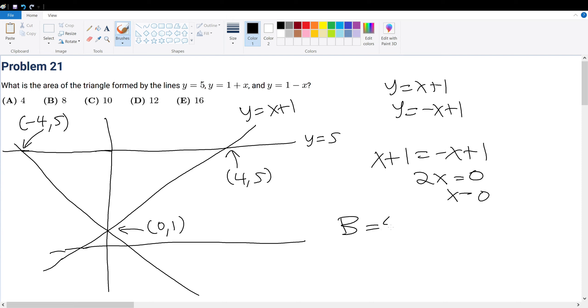So (4, 5) and (-4, 5)—well, this base of the triangle is 4 - (-4), and that's equal to 8. What is the height? The height is from y = 1 all the way to y = 5, so the height equals 4. So base times height divided by 2, which equals 4 times 4, which is 16. That is answer choice E.